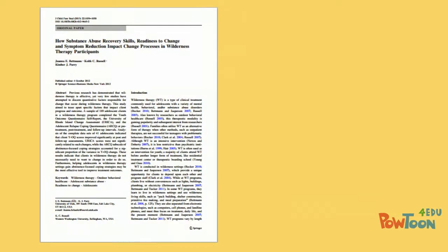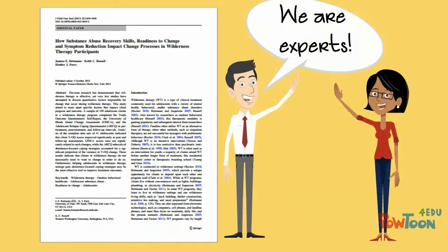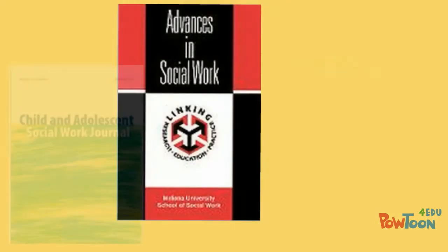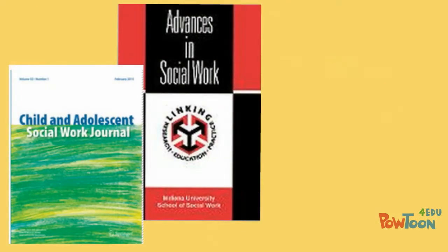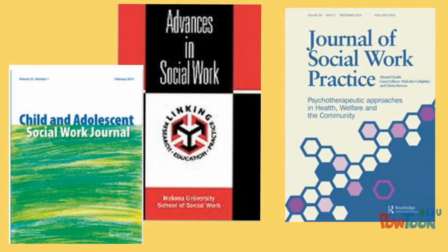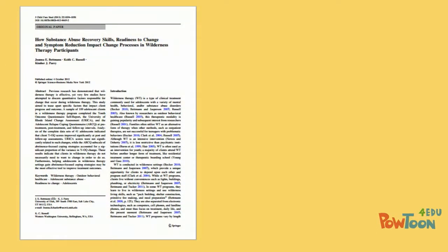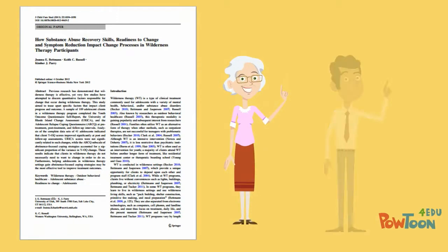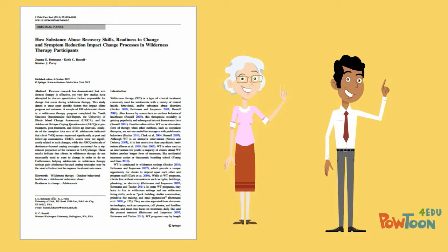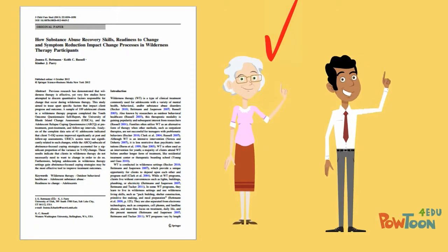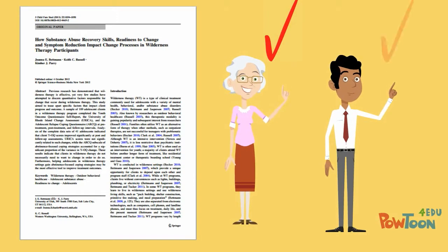Anne knew that scholarly articles are written by experts and are published in academic journals, such as the Journal of Social Work Practice. Anne knew that scholarly articles have been through the peer review process, meaning the article was reviewed by other experts in the field prior to publication.